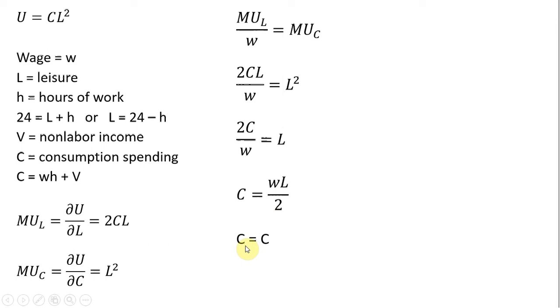The next step is I'll set C equal to C. We basically have two C equations, one over here and one over here. So setting them equal. I'm going to substitute out L. What is L? 24 minus H. So for L, I have 24 minus H on the left-hand side.